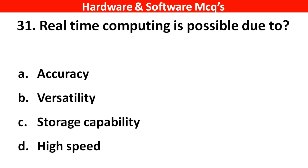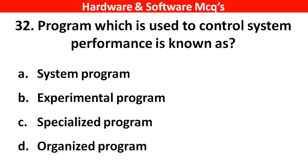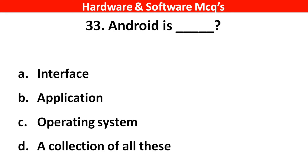Next question: Real-time computing is possible due to? The right answer is option D — high speed. Next question: Programs which are used to control system performance are known as? The right answer is option A — systems program. Next question: Android is a ___. The right answer is option D — a collection of all of these.